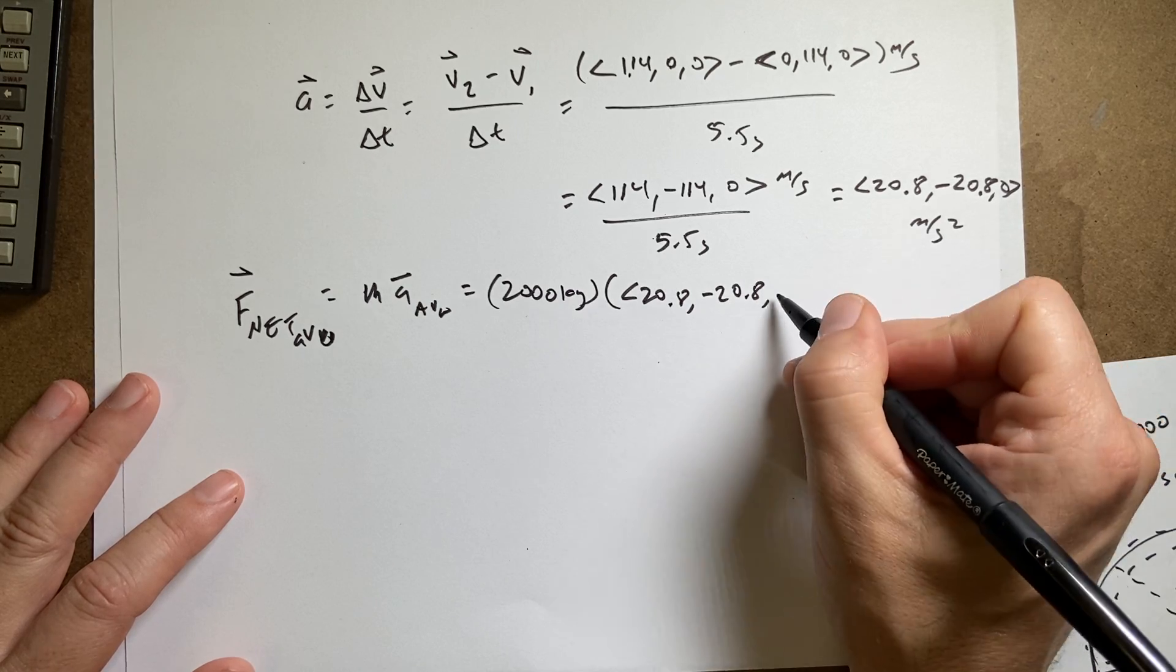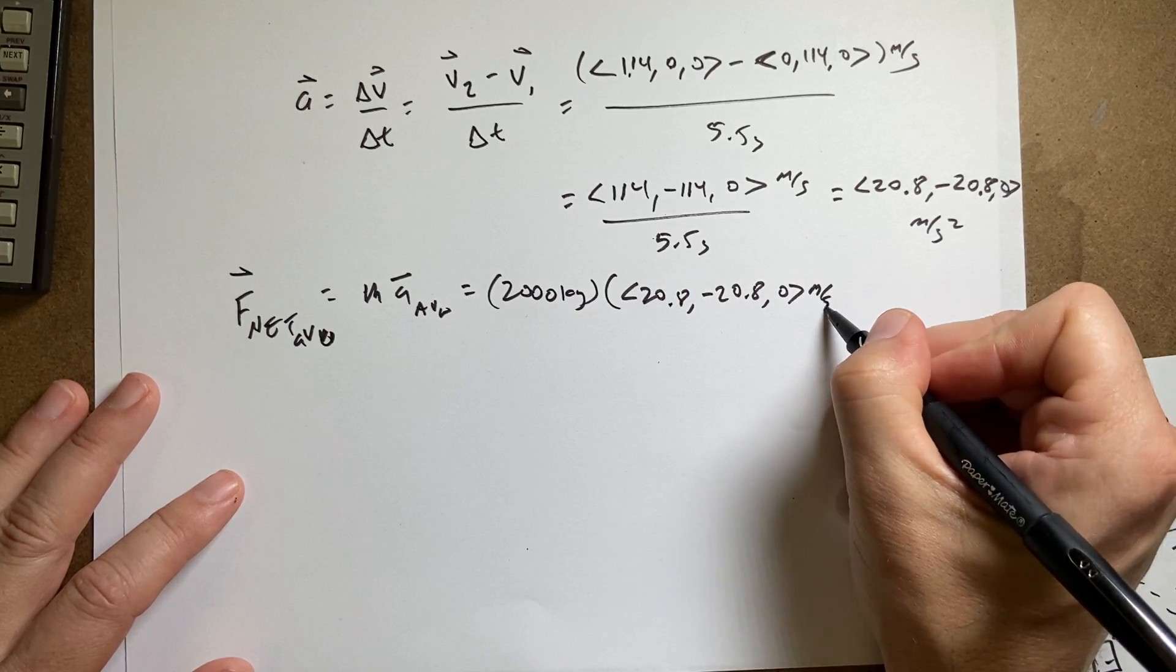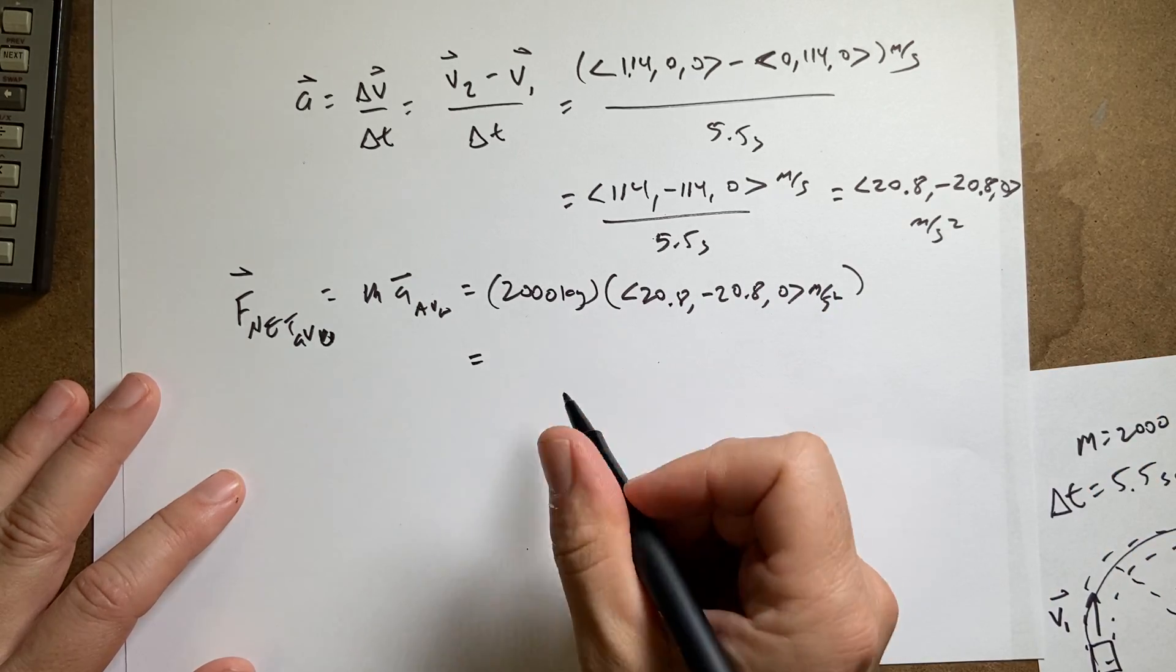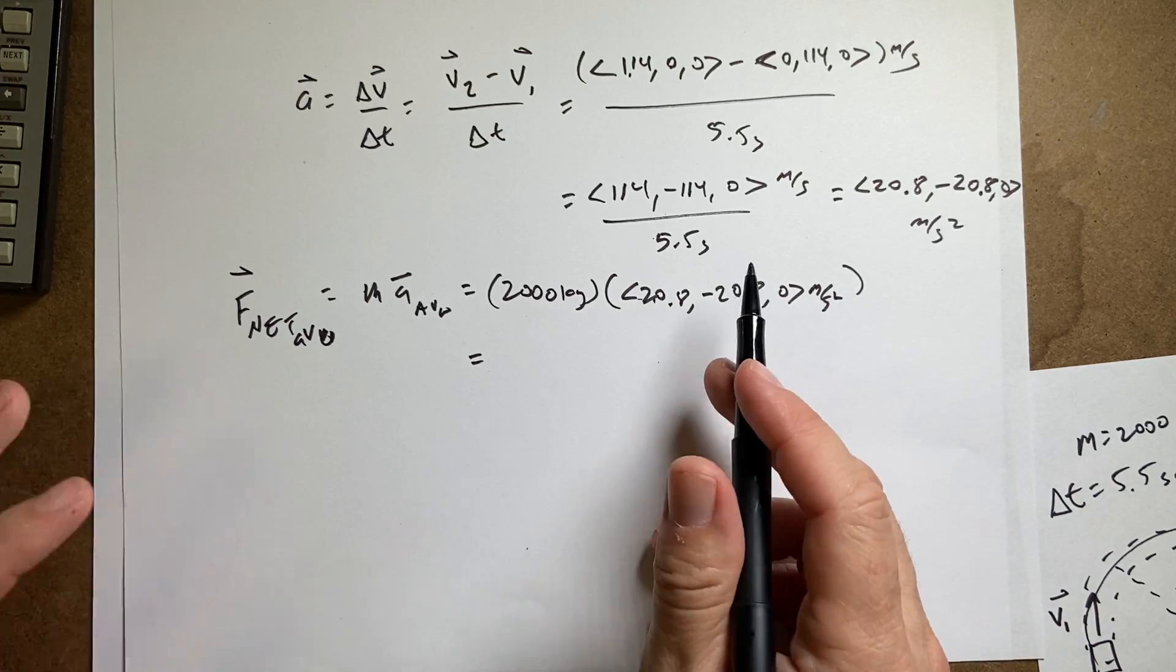So now I just need to say 2,000 kilograms times 20.8, minus 20.8, 0 meters per second squared. And so I need to multiply each of these by 2,000.